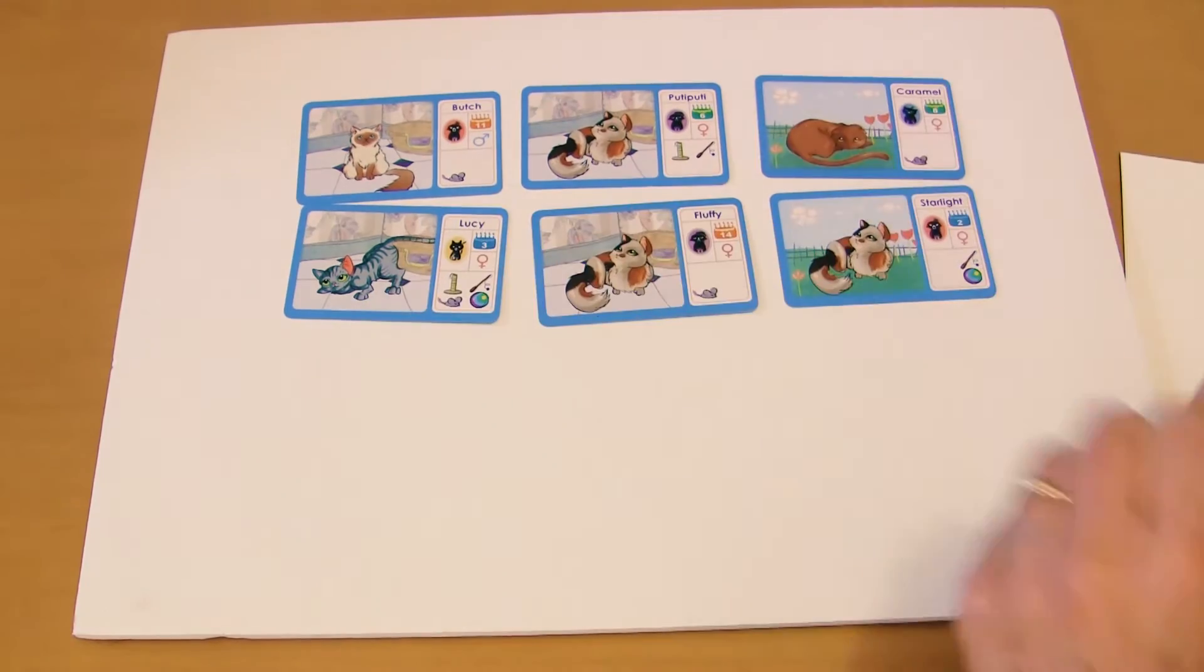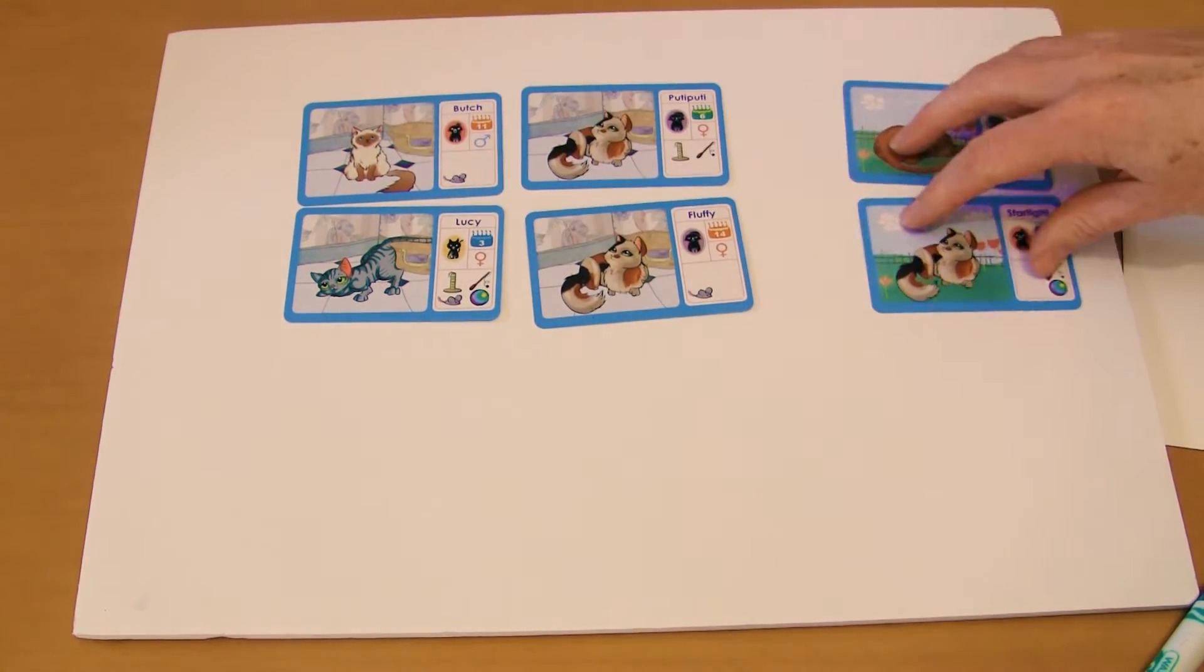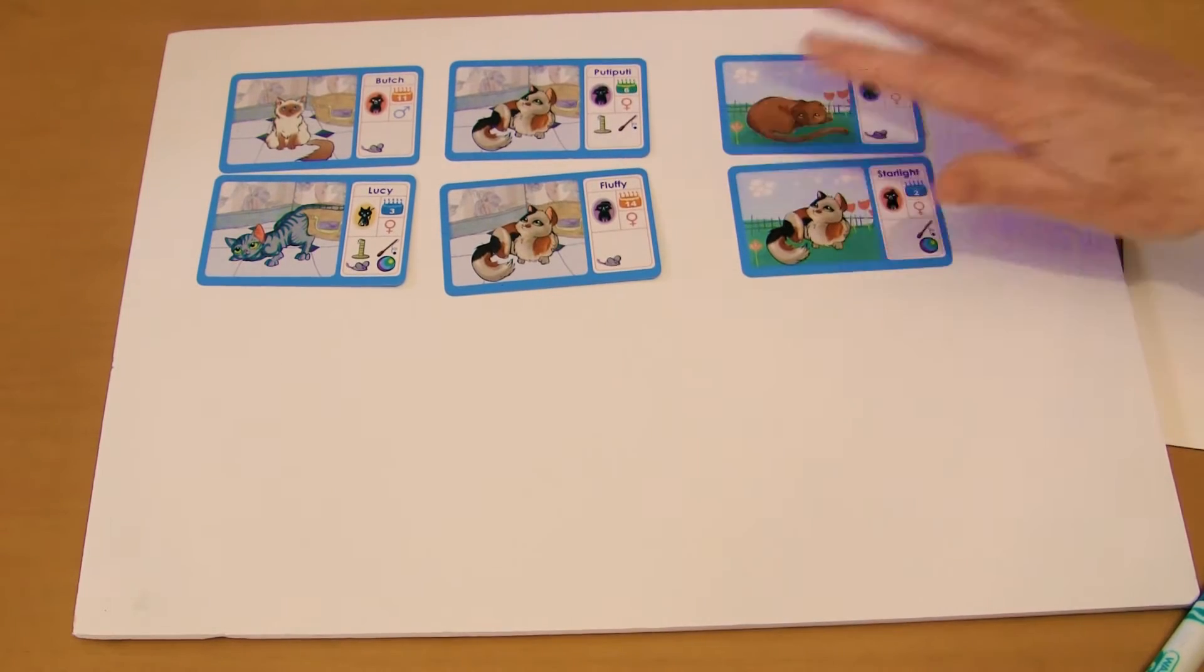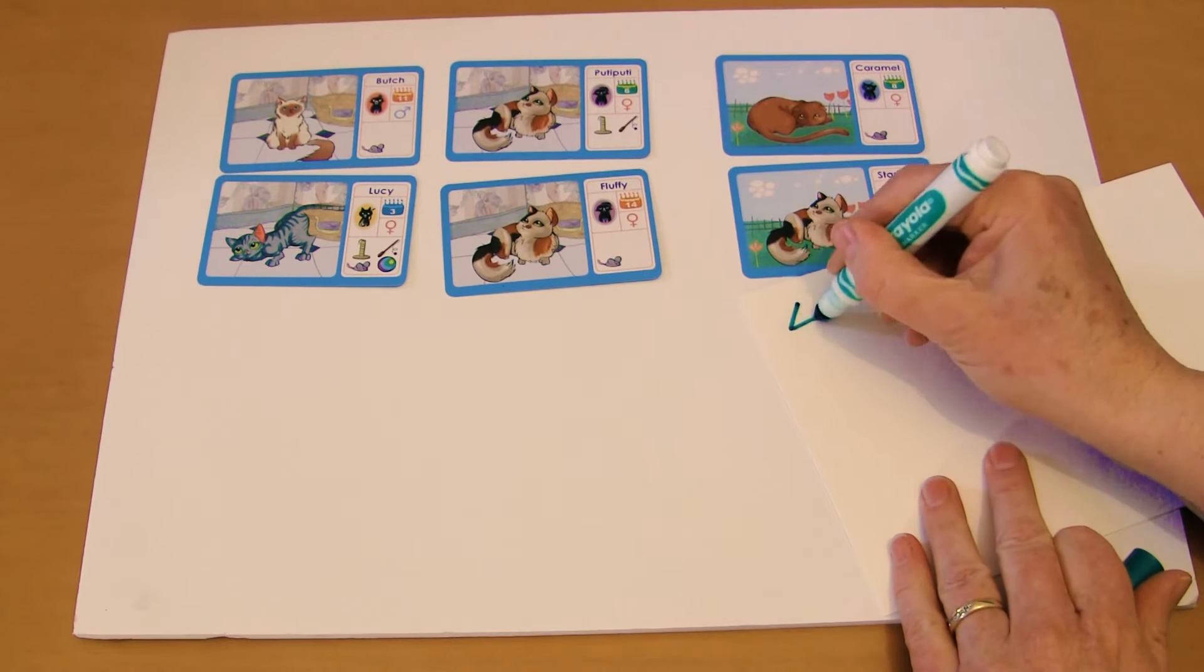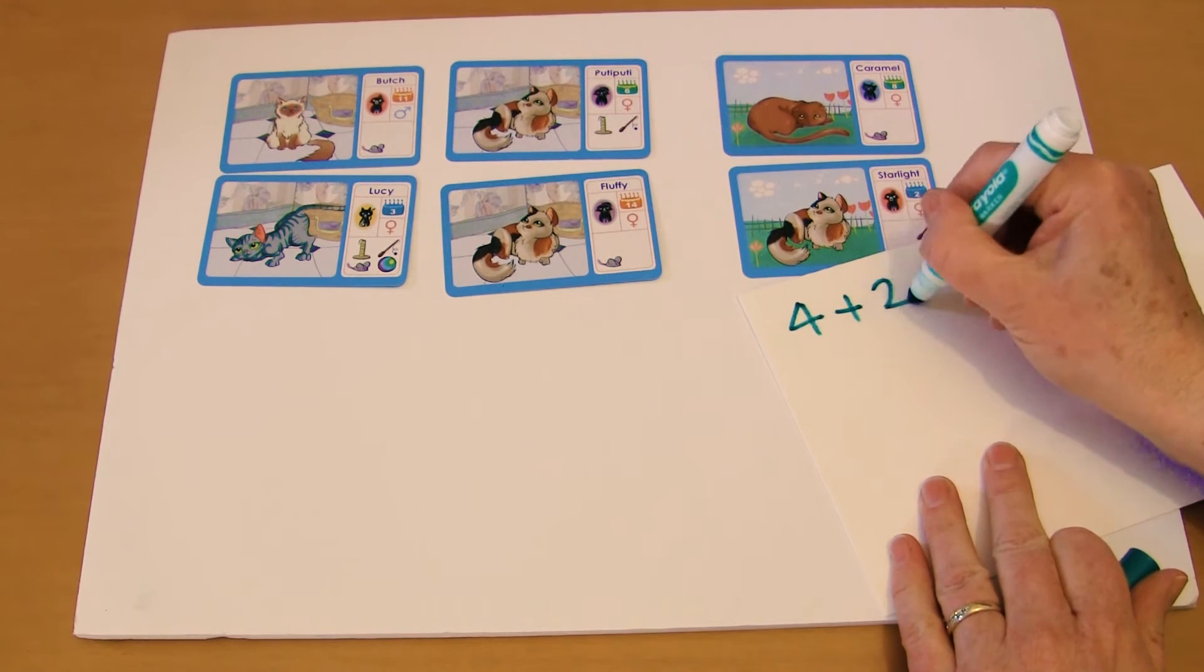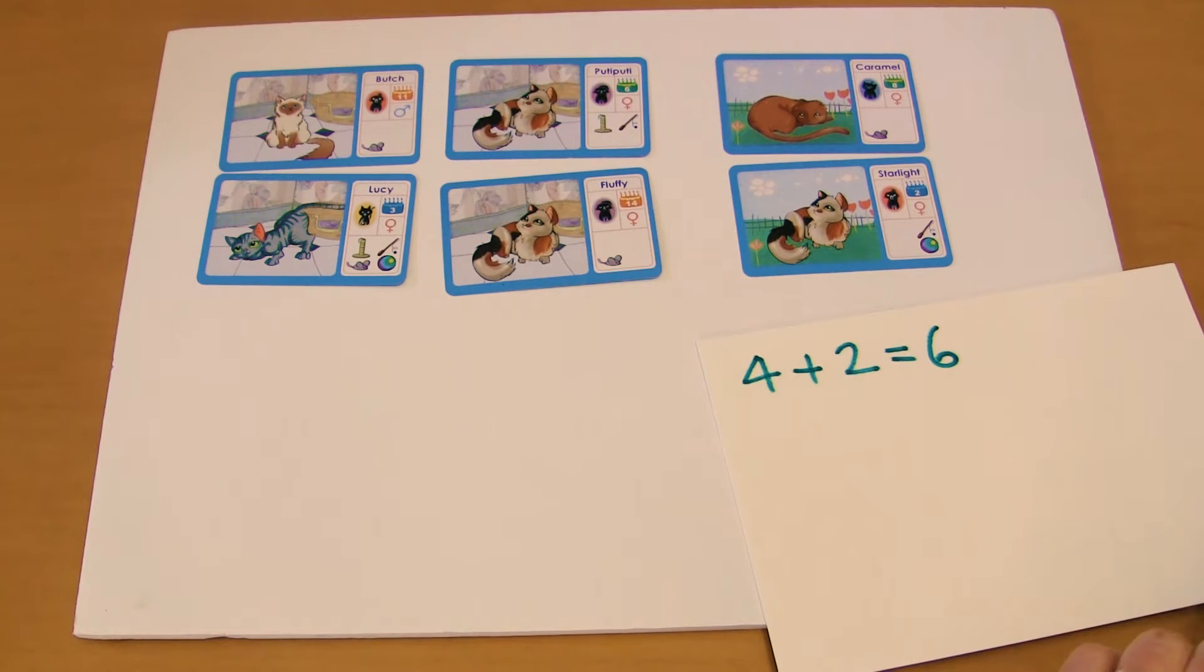And we're going to look at different ways to make up six. So in this one we could look at say indoor and outdoor cats. So we've got four indoor plus two outdoor cats equals a total of six cats. That's one way of looking at it.